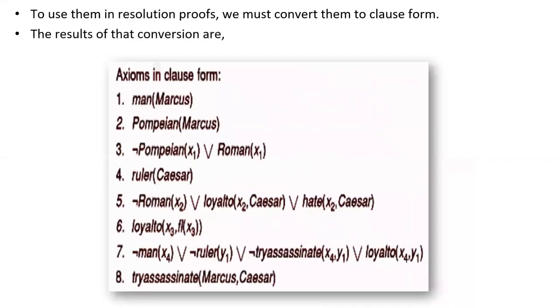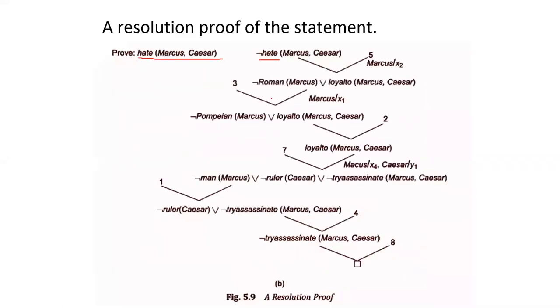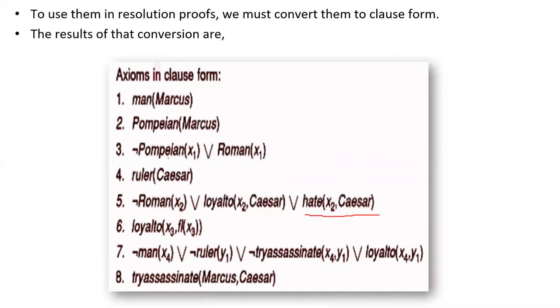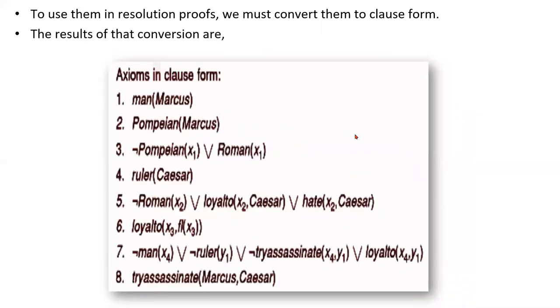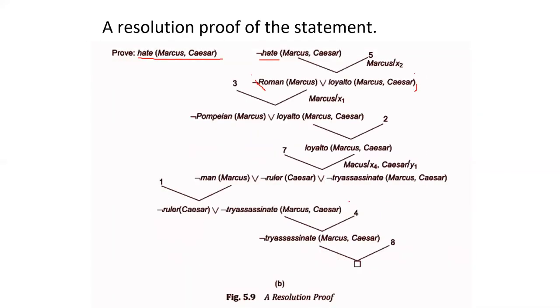Then in the fifth statement, you can see loyal to x2, Caesar and negation of Roman of x2. That has been substituted here. In x2 place, you're substituting Marcus. To match, you're taking the third Pompeian and Roman of x1, and in two, you're taking Pompeian of Marcus. Like this, you can come to a conclusion of the contradiction. This is the resolution proof that has been approved.